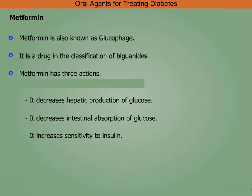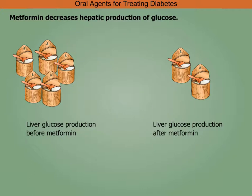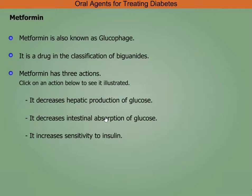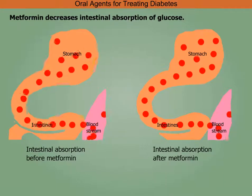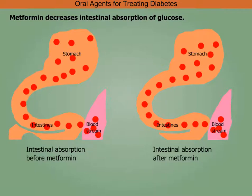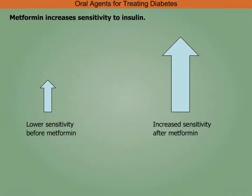Metformin, also known as Glucophage, is a drug in the classification of biguanides. Metformin has three actions: it decreases hepatic production of glucose, decreases intestinal absorption of glucose, and increases sensitivity to insulin.